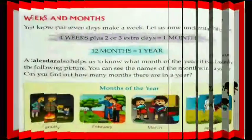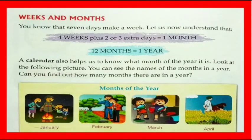Seven days make a week. Four weeks plus two or three extra days is equal to one month, and twelve months is equal to one year. A calendar also helps us to know what month of the year it is. Look at the following picture — can you find out how many months there are in a year?